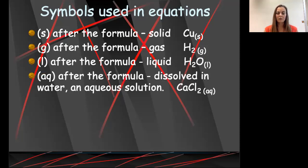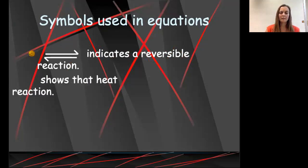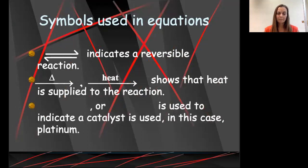Those are the main symbols that we use in our equations after our formulas to tell us what the states of matter are. Now we have some other symbols that we use in equations. We sometimes will see this double-headed arrow that indicates that we have a reverse reaction or a reversible reaction. We will also see sometimes a triangle on top of or below the arrow or the word heat. Either of those can be used to show that heat is being added to the reaction, not that the reaction is generating heat, but that heat is being added to the reaction.